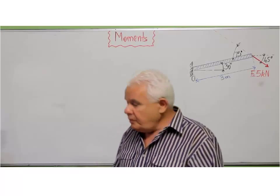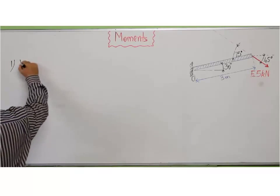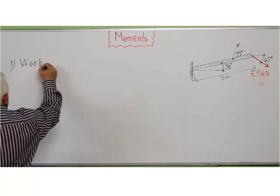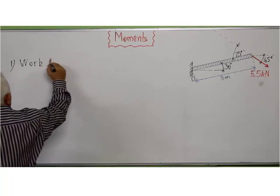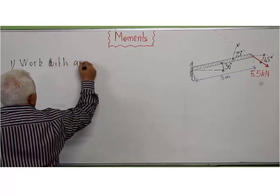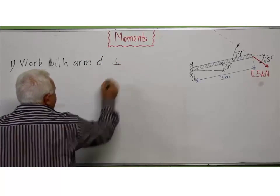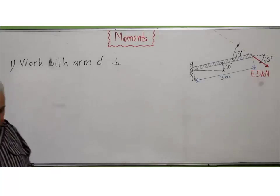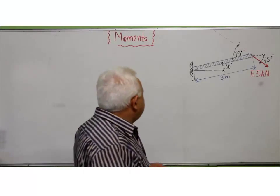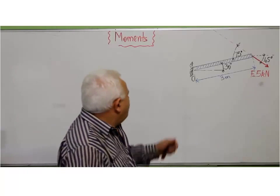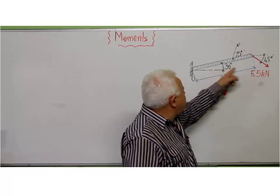The first one is to work with the arm D. This arm D should be perpendicular to the force. Here we have an example in which we have a force F applied to this rod, but not applied at 90 degrees, but applied at this angle, 45 degrees.